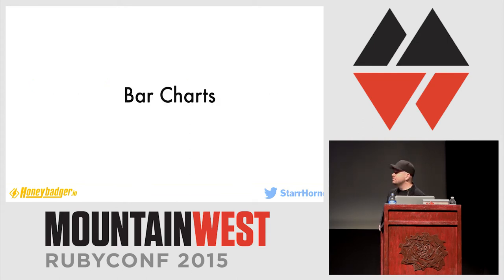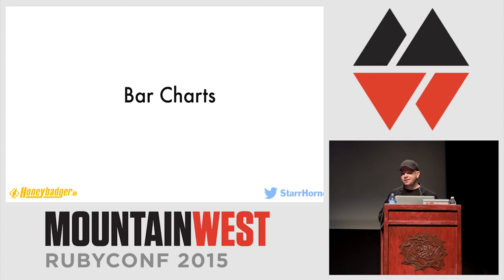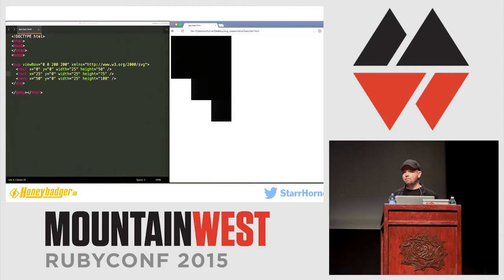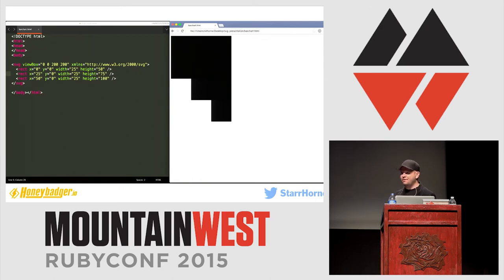Bar charts. I'm just going to be implementing these in SVG for now. Making these dynamic in Ruby is going to be almost trivial, so we're going to focus on the SVG so you can see how things are actually put together. A bar chart is just three rectangles next to one another — or however many rectangles. I've given each of the rectangles a height corresponding to some value, some percentage: fifty, seventy-five, and a hundred.